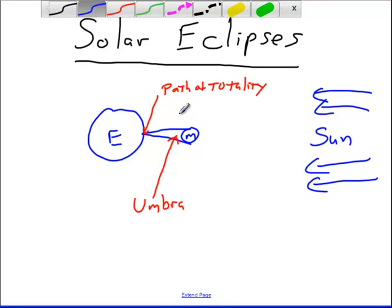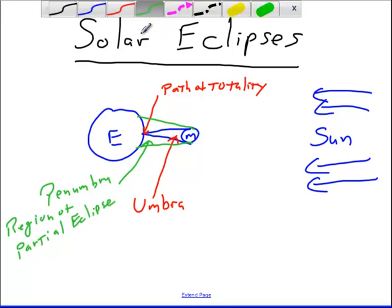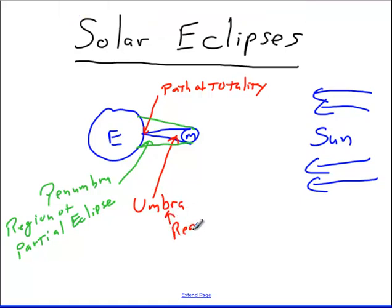We have not only this shadow, but also another part of the shadow. We'll draw it here in green to make it stand out. This part in the green is called the penumbra. This is the region of partial eclipse. We'll be able to see a partial eclipse of the sun. Whereas in the umbra, that is the region of total eclipse.